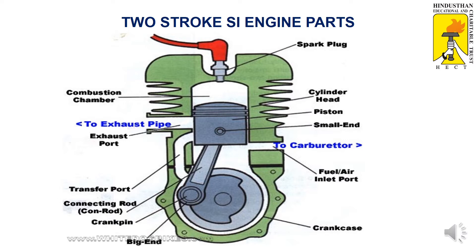The next one is the bottom casing block — the crankcase block. In this casing, it consists of a connecting rod and crankshaft. The connecting rod's small end is connected to the piston, and the bigger end is connected to the crankshaft. These are all the components of the two-stroke SI engine.